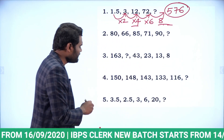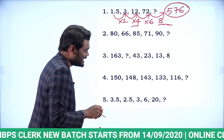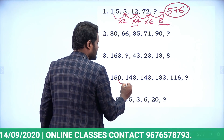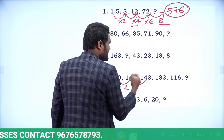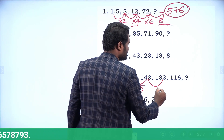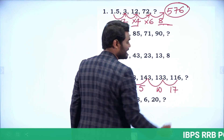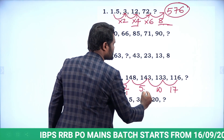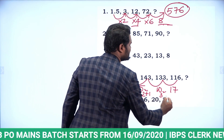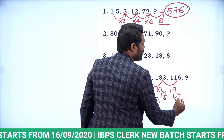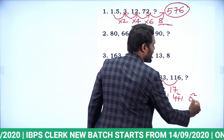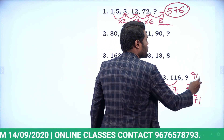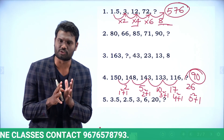Next question: 150, 148, 143, 133, 116, question mark. The series is gradually decreasing. The differences are 2, 5, 10, 17. These can be represented as 1²+1, 2²+1, 3²+1, 4²+1. The next difference should be 5²+1 = 26. So 116 − 26 = 90. The answer is 90.